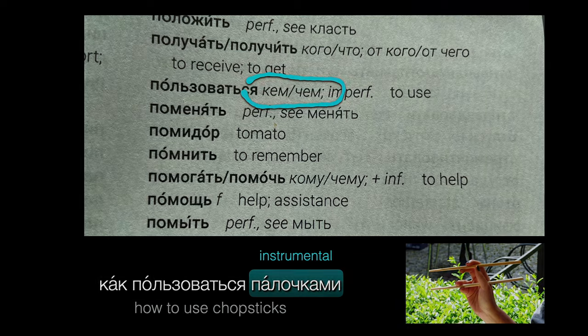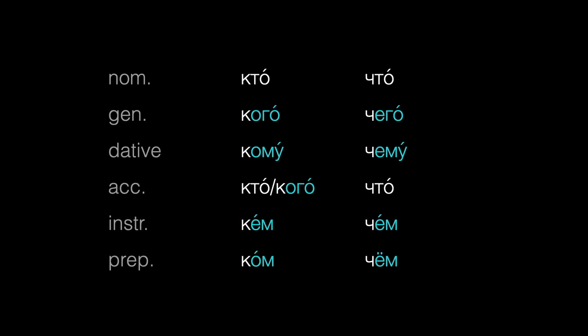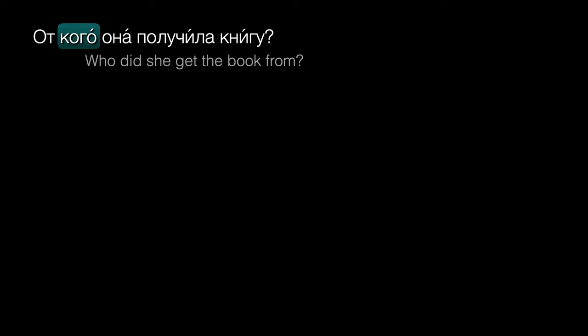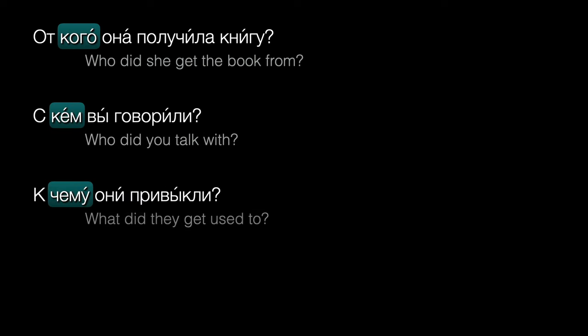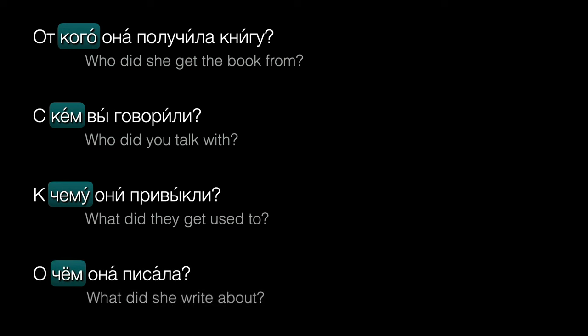Now, this does assume that you can recognize the case forms of КТО and ЧТО, and it really is important to learn these as you make your way through the Russian case system. After all, you'll need them for everyday conversation: От кого она получила книгу? С кем вы говорили? К чему они привыкли? О чём она писала? And they'll be a good guide to knowing which case to use with each new verb that you learn.